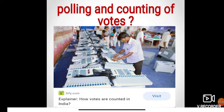A ballot paper is a sheet of paper on which contesting candidates' names, party names, and symbols are listed. Nowadays, Electronic Voting Machines are used to record votes instead of ballot paper. The machine shows the names of candidates and party symbols. Independent candidates are also assigned their symbol by election officials. Voters simply press the button against the candidate they want to vote for.